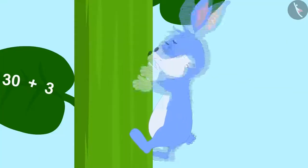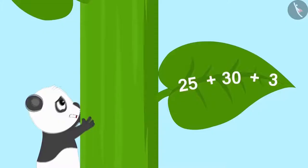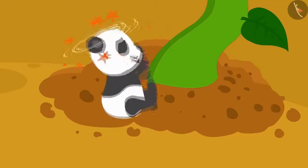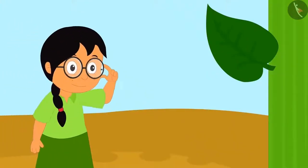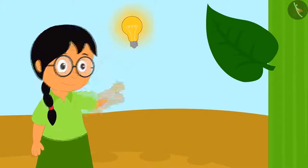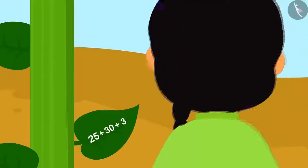Many people tried to climb the vine, but every time they slipped and fell down. Then Meenu got an idea. She saw a puzzle written on the leaf of the vine.